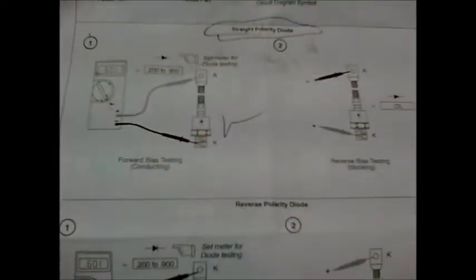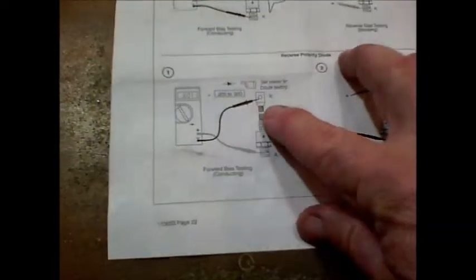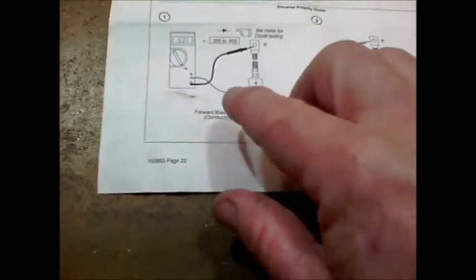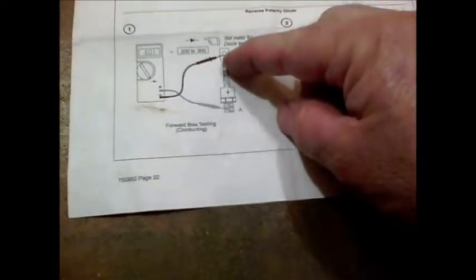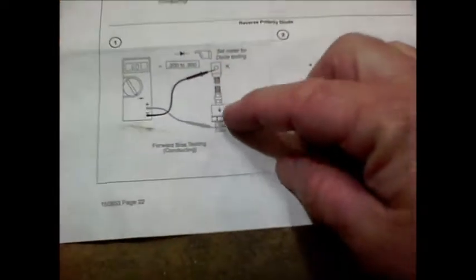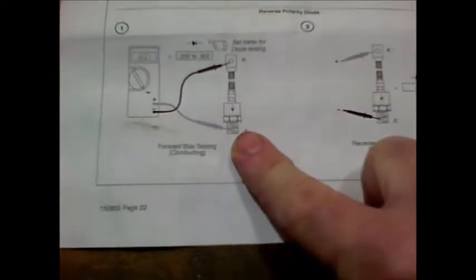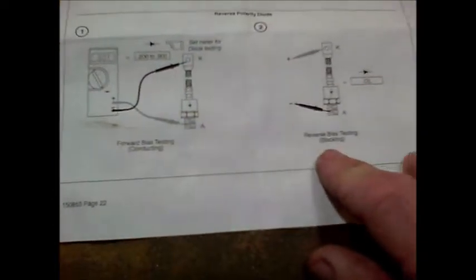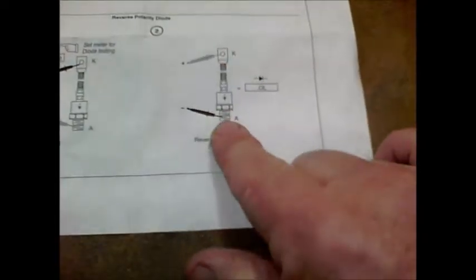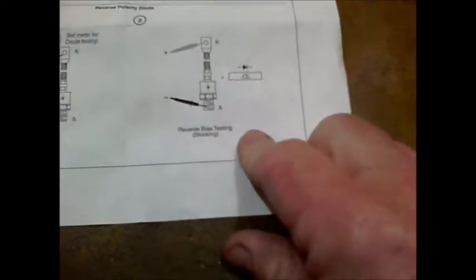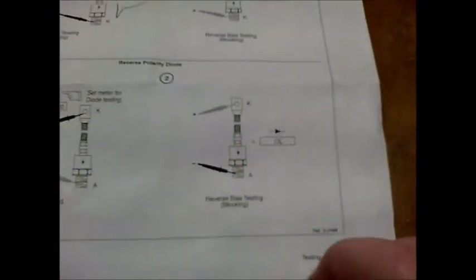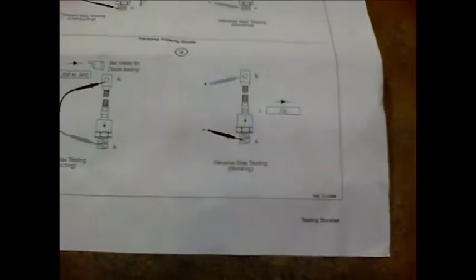All right, so what would a reverse polarity diode look like? Well in a reverse polarity diode you would put the black to the top and the red to the stud mount, and then that's where you get your reading. And then when you reverse those, the red to the top, black to the stud mount, you would get open loop or nothing. That would be a good reverse polarity diode.